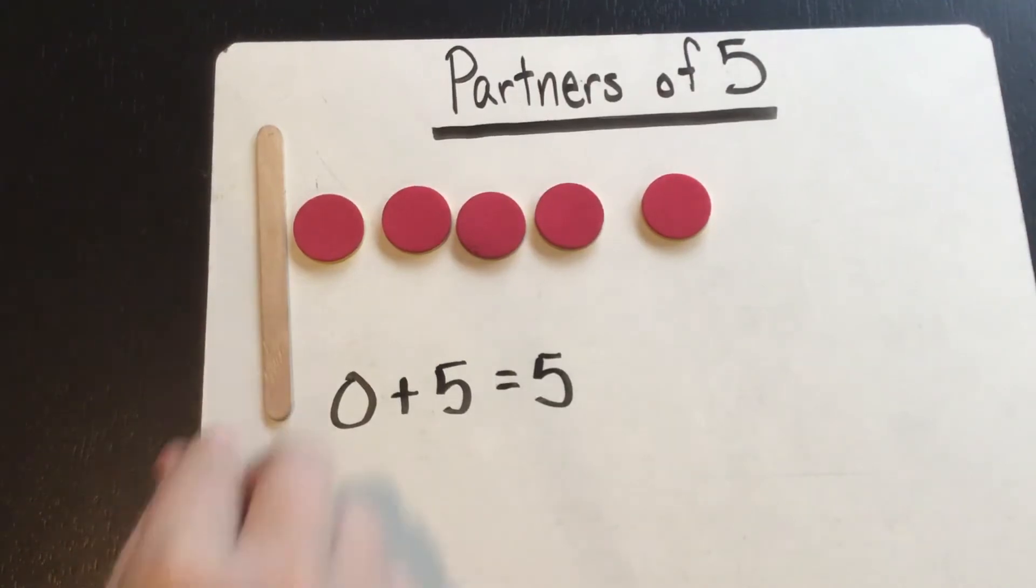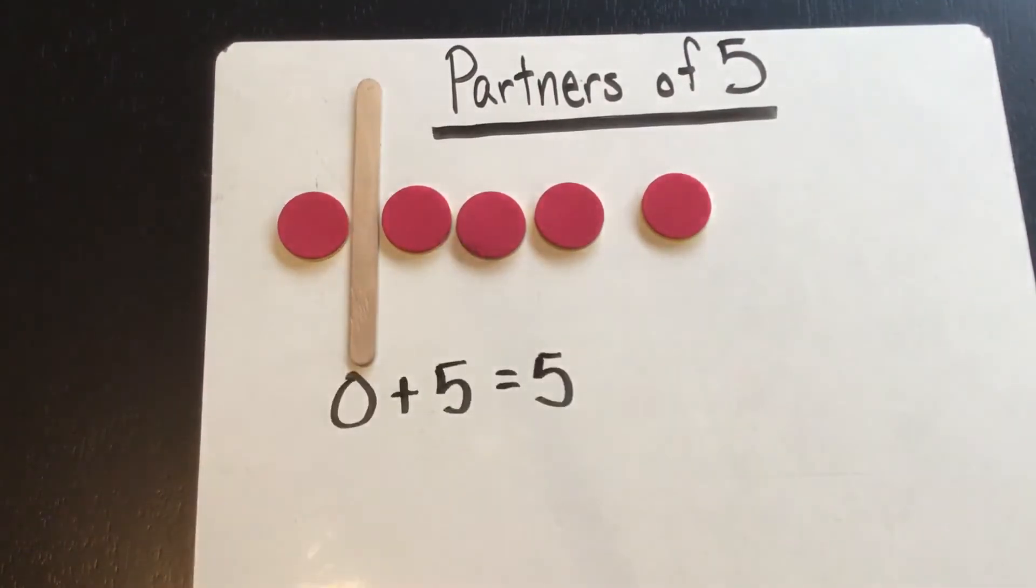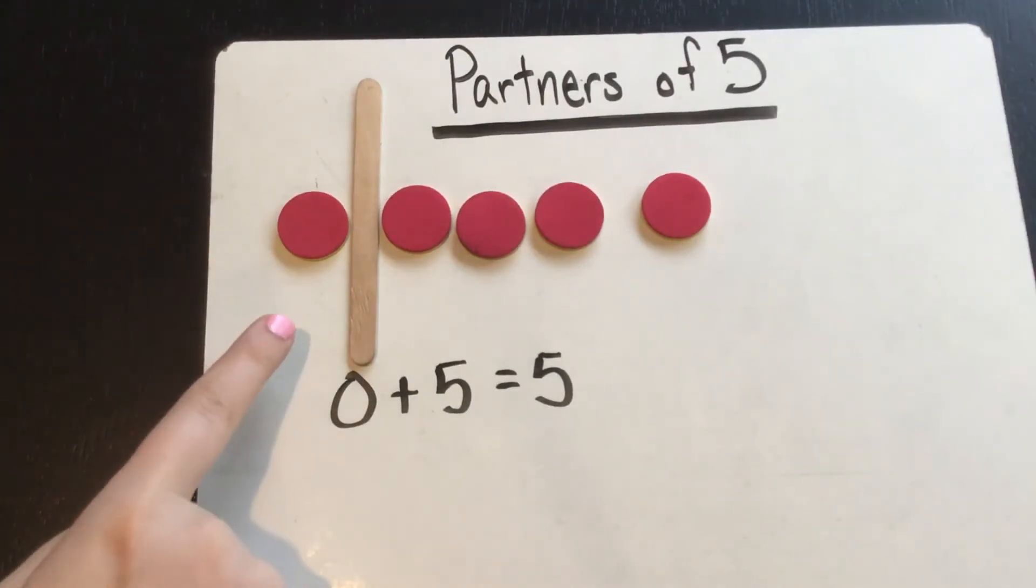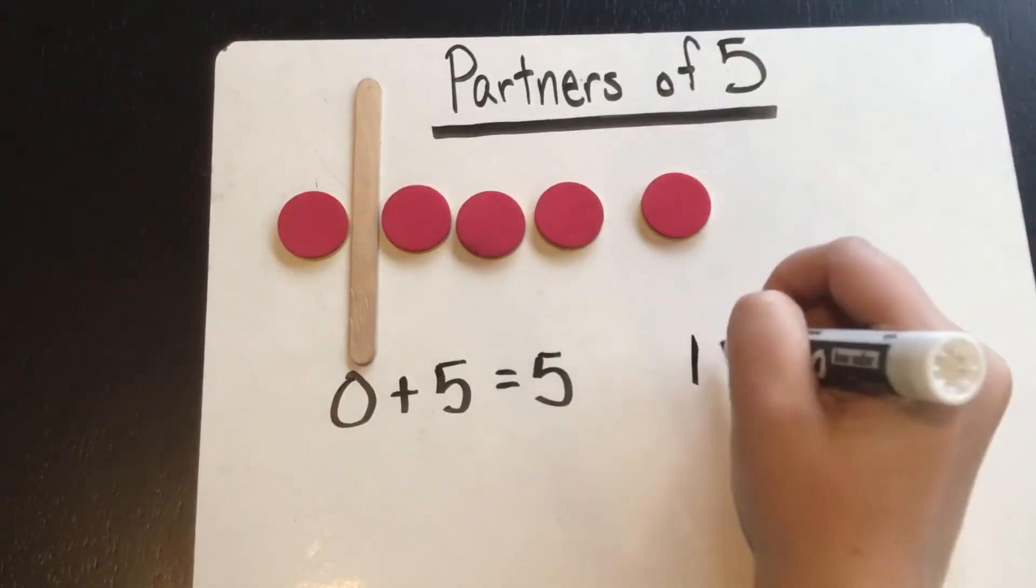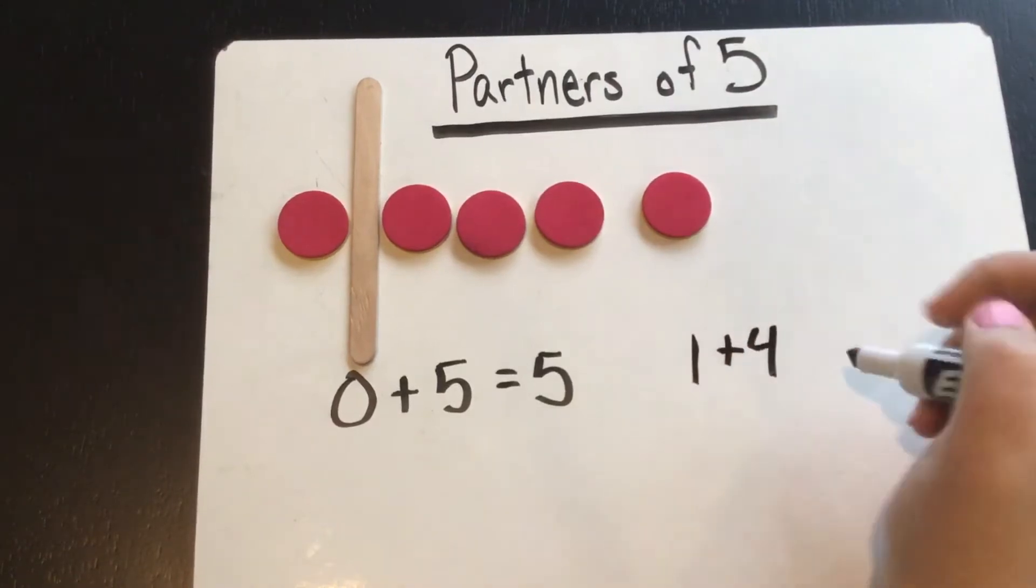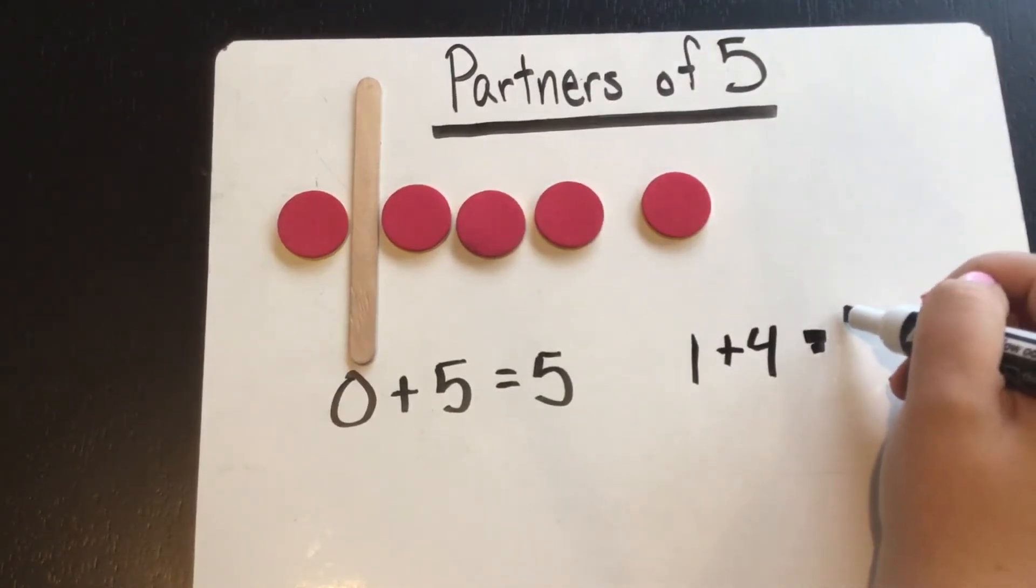Then we're going to move our break apart stick over one. Now the partners are one, two and three. The equation would be one plus four equals five.